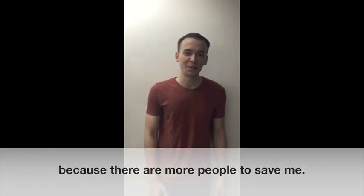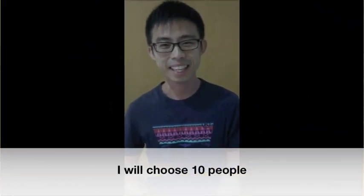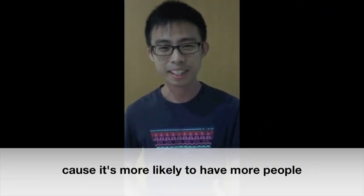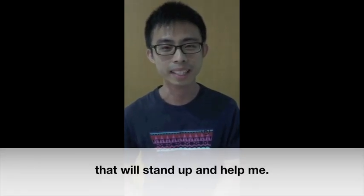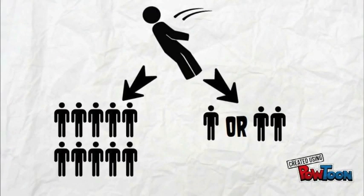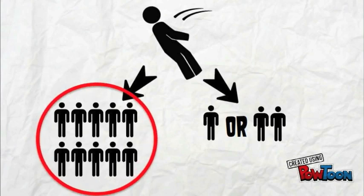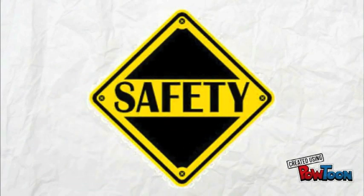I'll choose 10 people because there are more people to save me. I will choose 10 people because it's more likely to have more people that will stand up and help me in that case. So as we can see, many of us would think that it would be safer to faint in a place where there are 10 people around because having more people would mean that there is a higher likelihood of receiving help. This leads to the myth that there is safety in numbers.